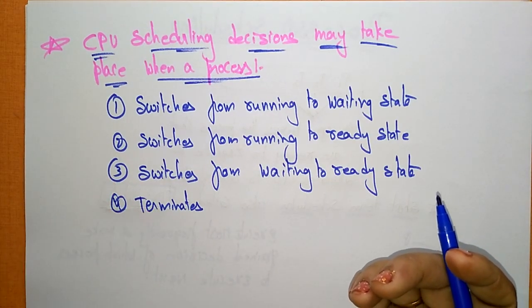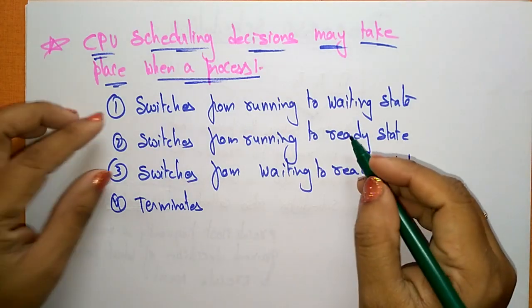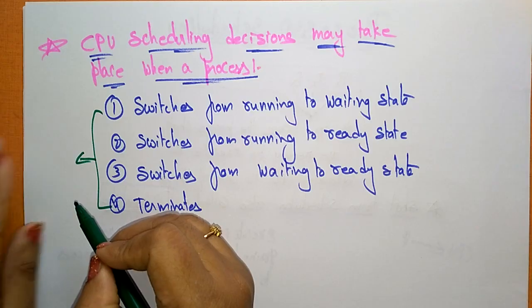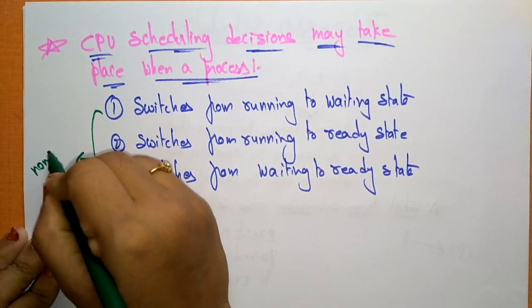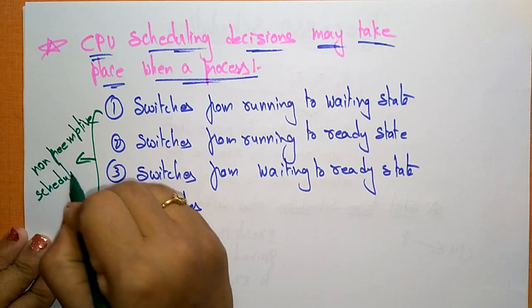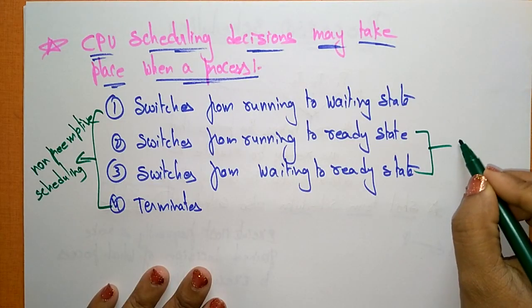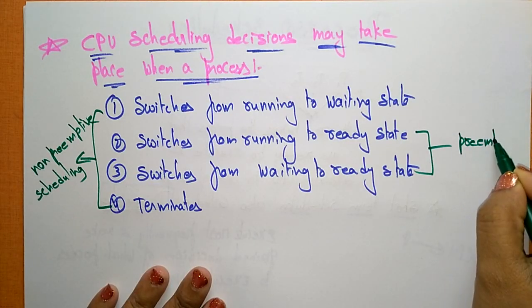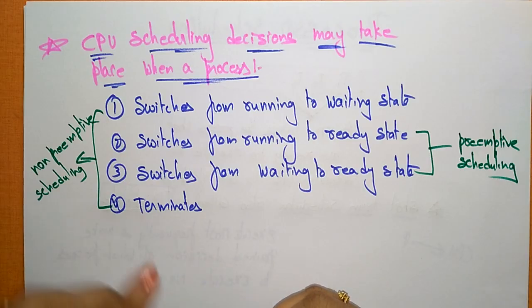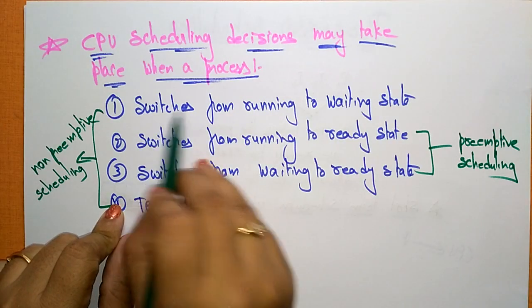CPU scheduling decisions also take place when a process terminates. So the decisions occur when processes switch from running to waiting, running to ready, waiting to ready, and when a process terminates. Cases one and four — running to waiting and termination — are called non-preemptive scheduling.